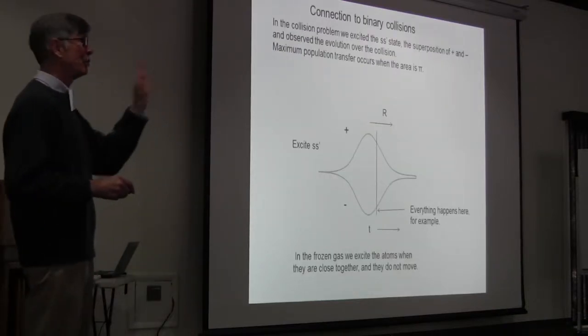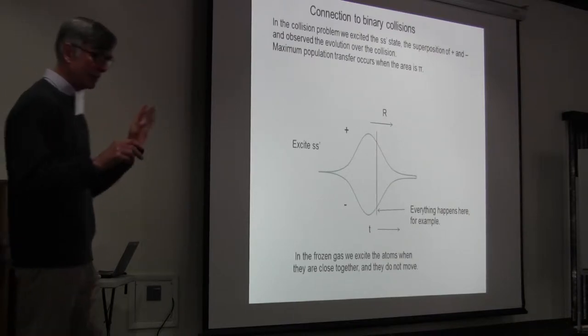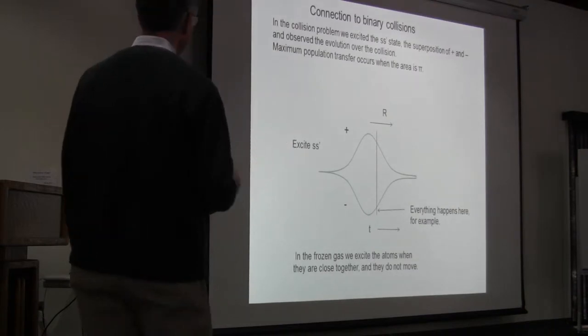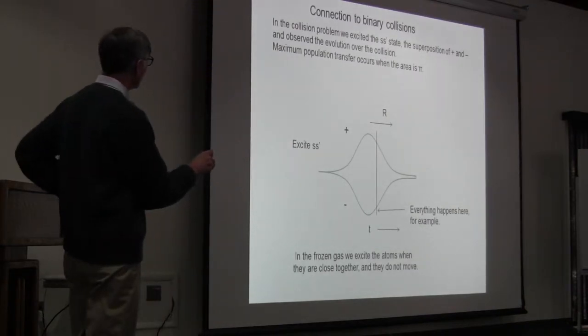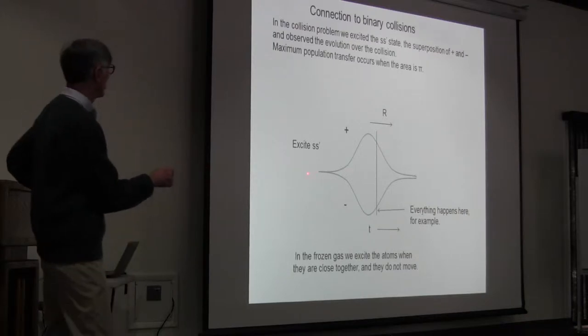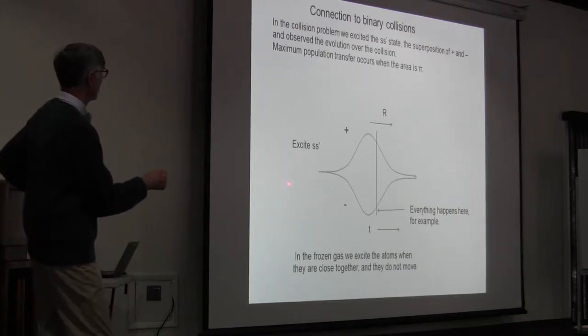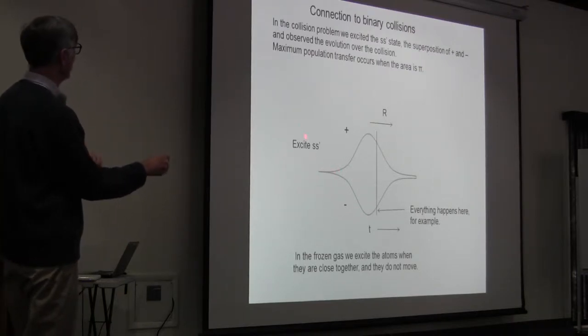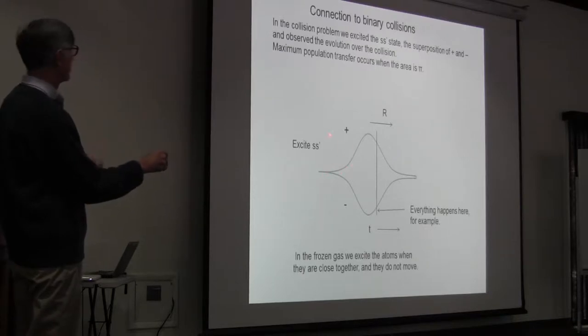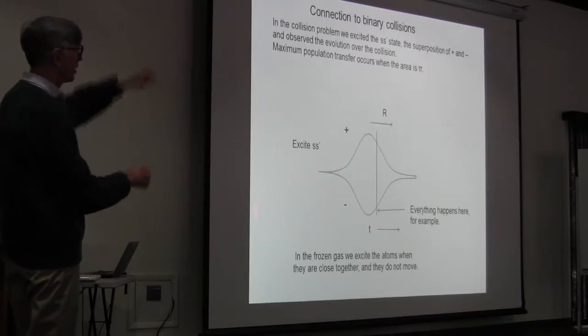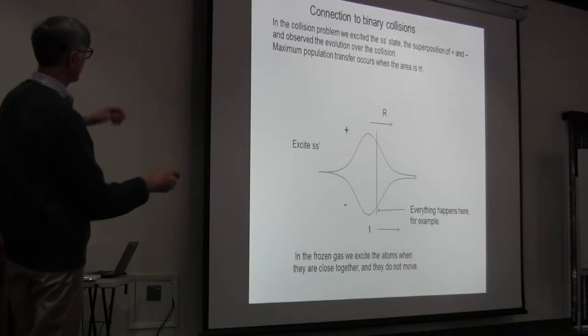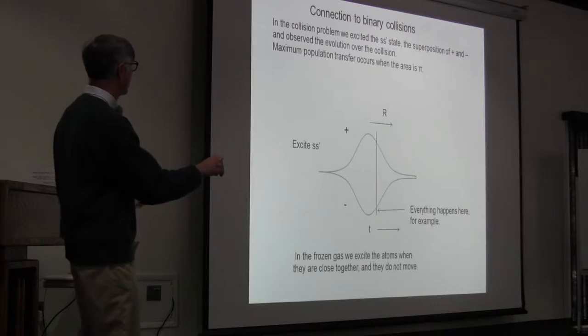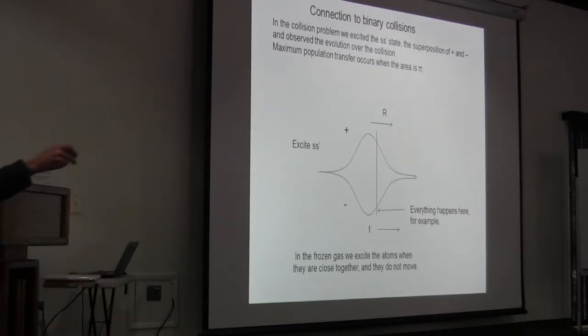I would like to now look at this in two pieces. First of all, I'd like to make the connection to the binary collisions that we were discussing earlier. In the collision problem, at time t equals zero, we excited the s state for it. Then, on resonance, the two eigenstates, the plus and minus combinations, split apart in energy, and then they're recombined. As the two atoms come together, the levels separate. As they move apart, they come back together again. If you have a phase accumulation of pi, you have a transition.